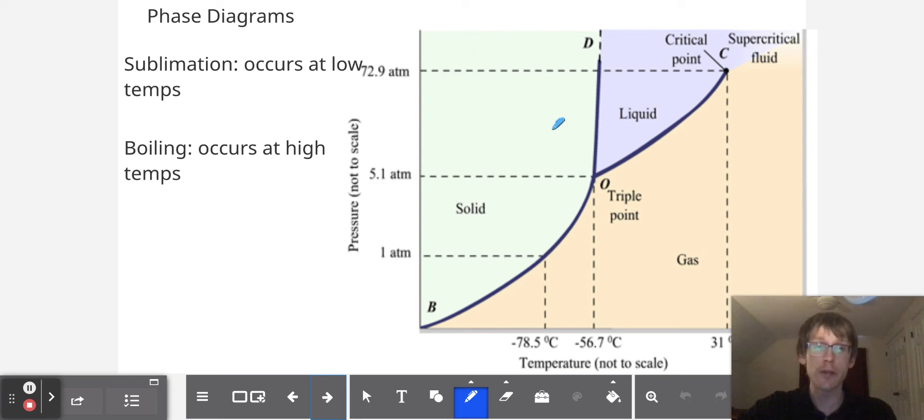I will also note that oftentimes there's a fairly vertical line between the solid and liquid phases, meaning that it doesn't really matter what your pressure is. Once you hit a critical temperature that's really going to tell you whether it's the gas that's going to be converting to a liquid or the gas that's going to be converting to a solid as you raise the pressure.